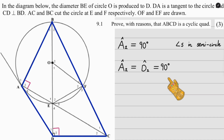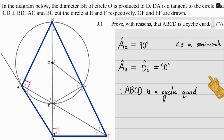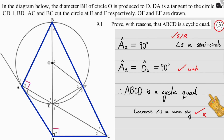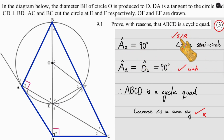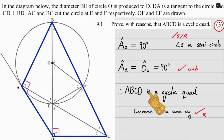After making that link, we jump to our conclusion: ABCD is a cyclic quad, reason — converse angles in the same segment. Looking at the marks: stating A2 is 90 due to angles in a semicircle gets the first mark; linking the two 90-degree angles gets the second mark; and the correct reason for why ABCD is a cyclic quad gets the third mark.